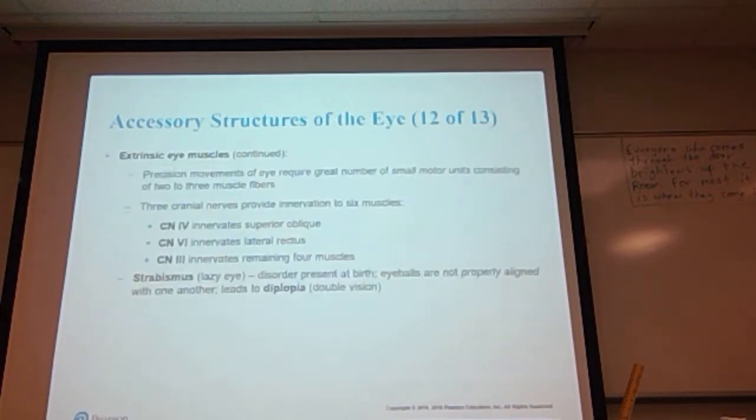The intrinsic eye muscles allow for very precise movement of the eye. These muscles use a large number of small motor units consisting of two or three muscle fibers. The muscle fibers come from basically three cranial nerves: cranial nerve four innervates the superior oblique muscle, cranial nerve six innervates the lateral rectus muscle, and cranial nerve three innervates the remaining four muscles. So we get innervation from cranial nerves four, six, and three.